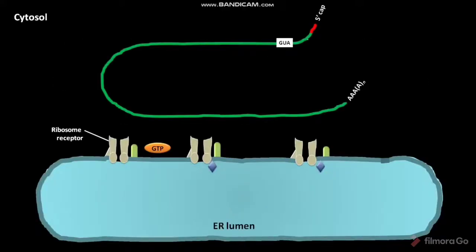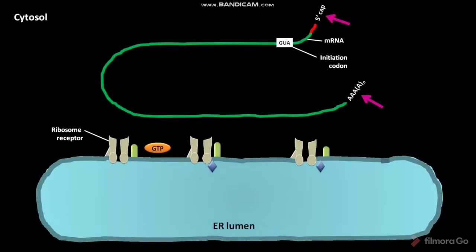This is an mRNA present in the cytosol of a eukaryotic cell. The mRNA has a 5' cap and 3' poly-A tail. The AUG sequence present in this mRNA is the initiation codon where translation starts.